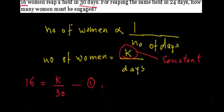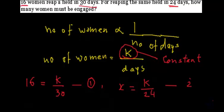Now we have the same field but we want to reap it in 24 days, and we want to know how many women we will need. Let's assume the number of women needed this time is x. Substituting into the formula gives us x equals k divided by 24. We have got this equation by using the same formula. Let's call this equation number 2.